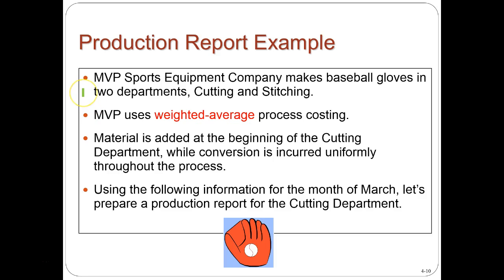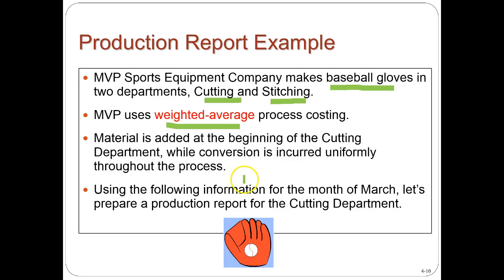Production report example: MVP Sports Equipment Company makes baseball gloves and has two departments — a cutting department and a stitching department. MVP uses weighted average process costing. Materials are added at the beginning of the cutting department, while conversion costs are incurred uniformly throughout the process. Using information for the month of March, we'll prepare a production report for the cutting department. Raw materials (leather) go into the cutting department to be cut, then transfer to the stitching department.